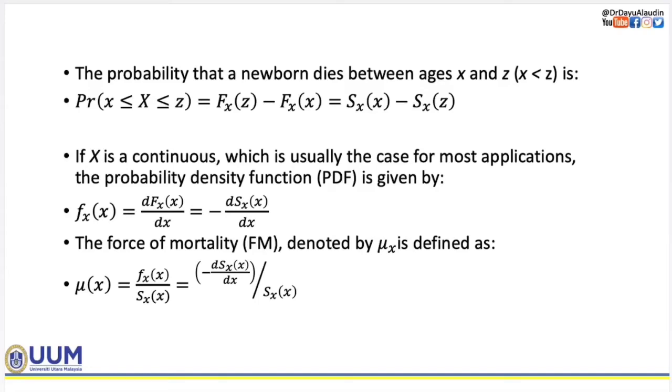If we draw the timeline for this situation, the current age is X and Z is here. So the time of death is between X and Z. We are interested in this interval. If we use the CDF or the DF, probability of death, we need to take Fx at time Z minus Fx at time X.